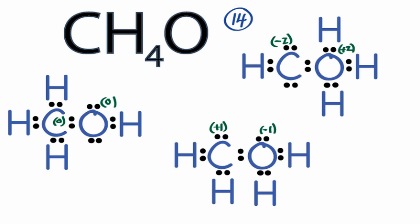When I calculate the formal charges, this is what I find. In the structure at the top, we have a -2 for carbon and a +2 for oxygen. I know oxygen is more electronegative than carbon, so this doesn't make sense. I want my formal charges to be as close to zero as possible, so that structure doesn't make sense.